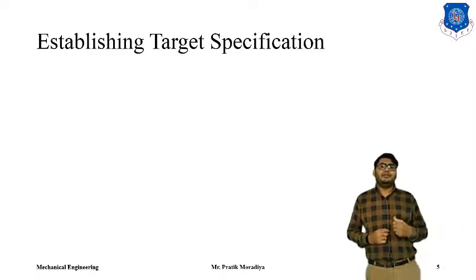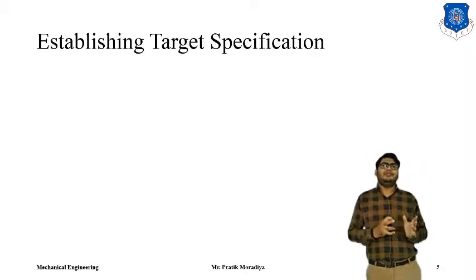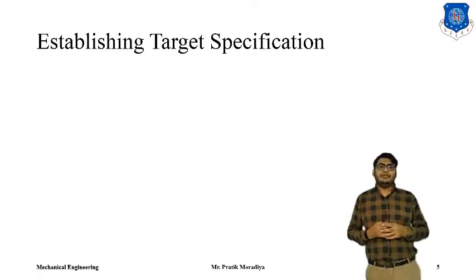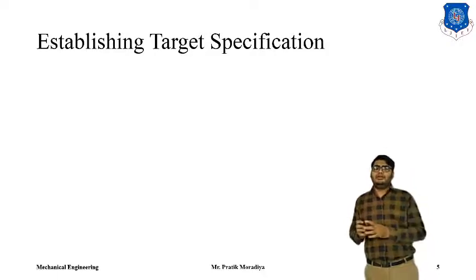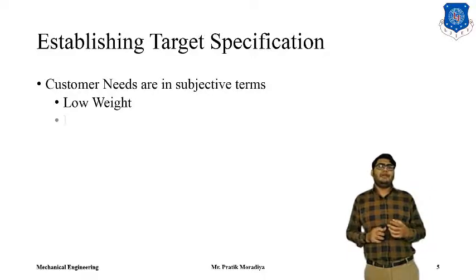Once we have identified different customer needs, we establish target specifications. What is the difference between specifications and needs? In a broader sense, specifications are the numbers we want to achieve in our product. For example, for a mobile phone: 8 GB RAM, a 1.5 GHz octa-core processor, or 128 GB of memory — all these are specifications. Needs, on the other hand, are expressed in subjective terms — there are no numbers associated with them; they are in qualitative form.